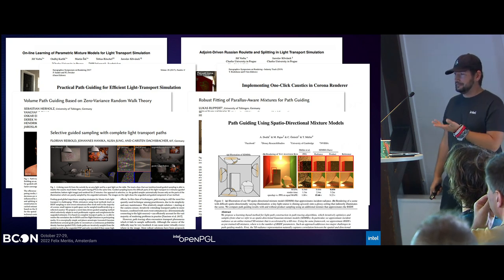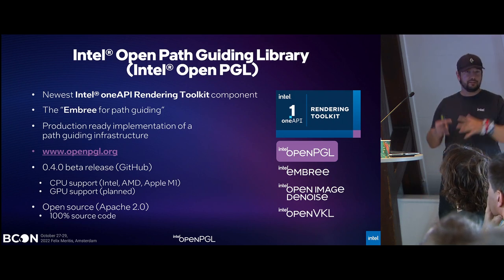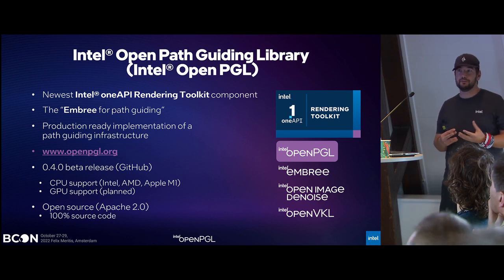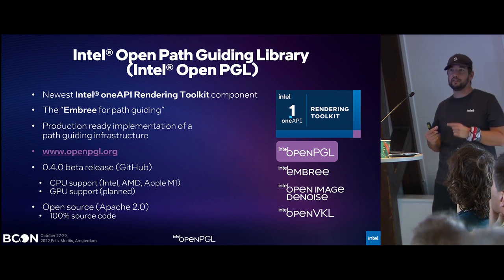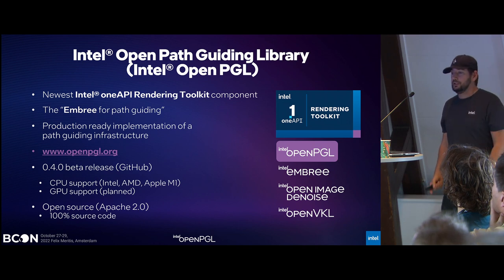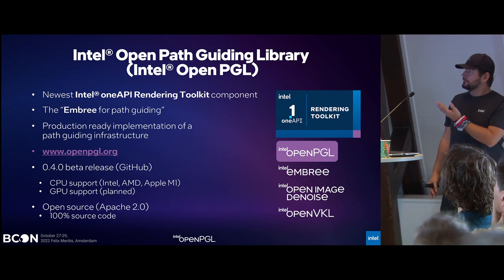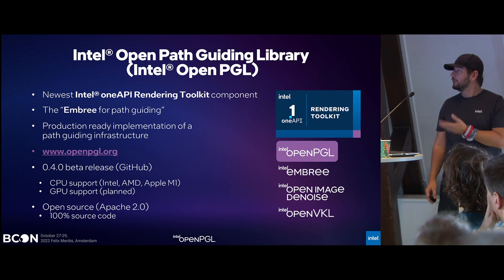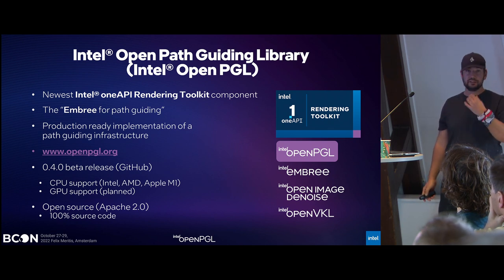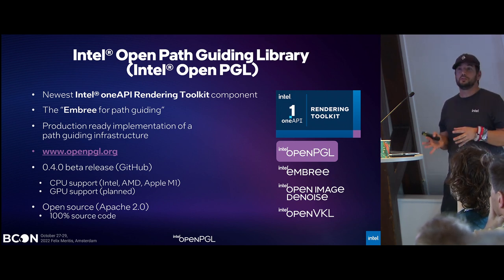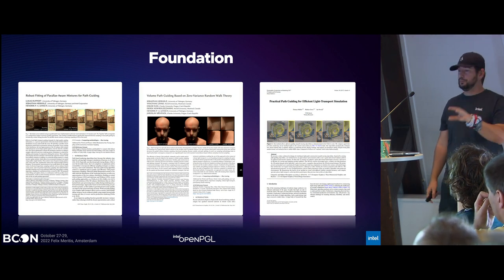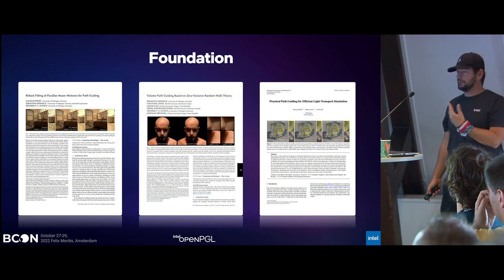This is where we at Intel came up with the idea: let's take all these papers, boil them together into one open-source library, so that people who build renderers can have easy access to integrate path guiding. This library is called Intel's Open Path Guiding Library, or Intel OpenPGL. It's our newest component in the OneAPI Rendering Toolkit — alongside things you probably already know like Embree, OpenImageDenoise, or OpenVKL. The foundation consists of three popular path guiding papers that we combined together.